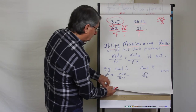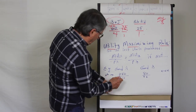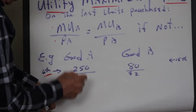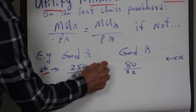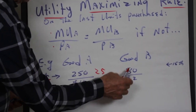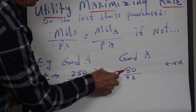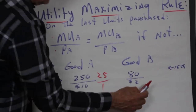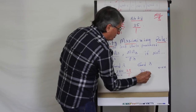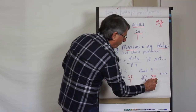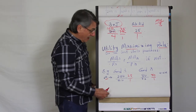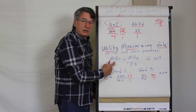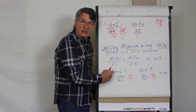For example, if you're getting 250 utils on the 6th unit purchased and you paid $10 for each unit, you're getting utils at the rate of 25 per dollar. Whereas if you're getting 80 utils on each unit of good B — say the 15th unit purchased — and each unit costs $2, you're getting utils at the rate of 40 per dollar. You have not maximized because the marginal utility per dollar rates are unequal.